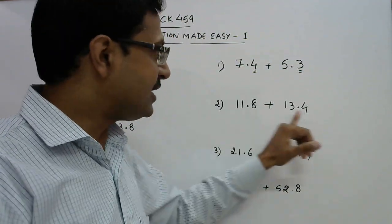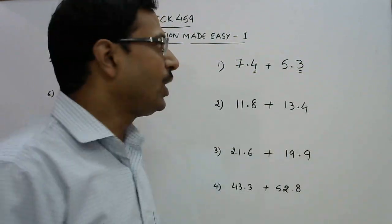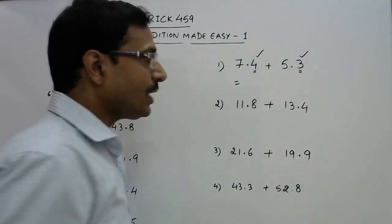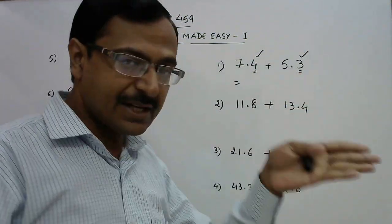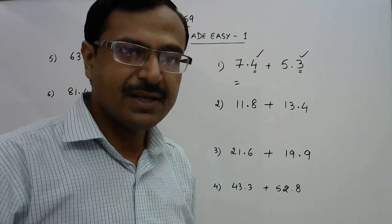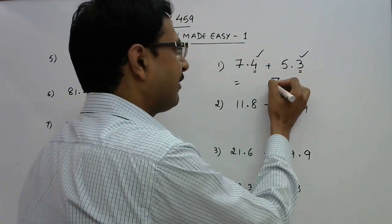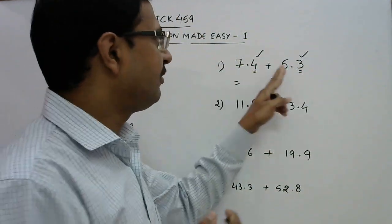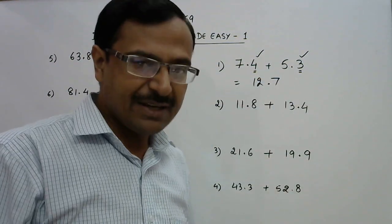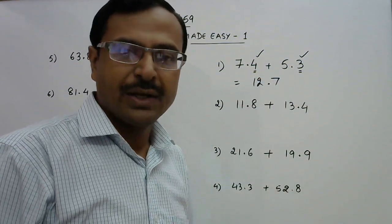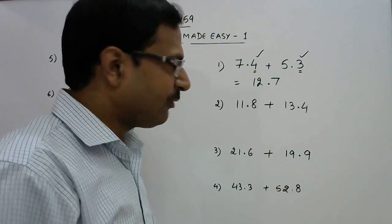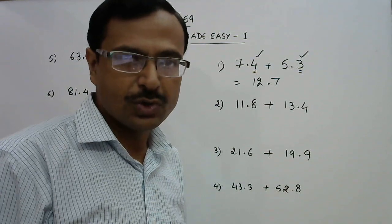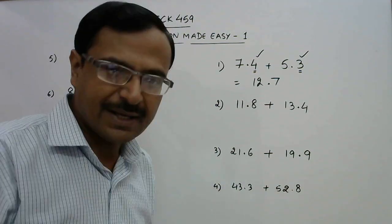In this type of question, whenever the sum of these two numbers after the decimal place is a single digit number, then things are very simple. Just write 4 + 3 = 7 after the decimal place and add the numbers which are in front of the decimal place: 7 + 5, that is 12. A very simple process. I am sure 99 percent of people preparing for competitions can do this orally within one second without use of pen and paper. Now come to some complex examples.